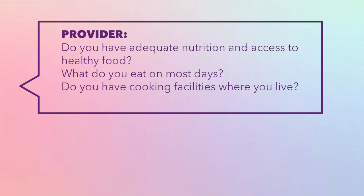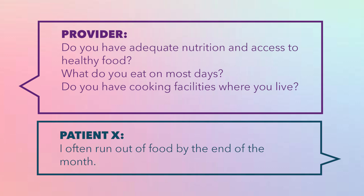During a substance use evaluation, the provider asks Patient X the recommended questions: Do you have adequate nutrition and access to healthy food? What do you eat on most days? Do you have cooking facilities where you live? Patient X shares that she often runs out of food by the end of the month. The provider then asks about food stamps, and Patient X tells you she is unable to receive SNAP benefits because of a prior felony conviction.